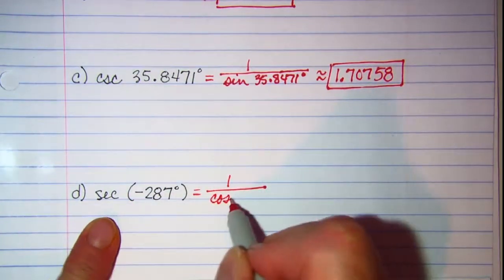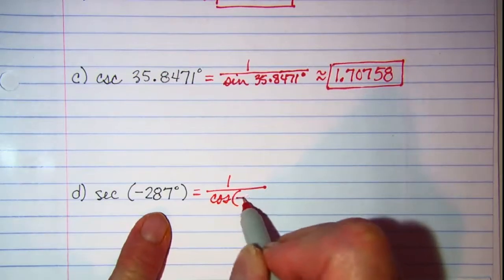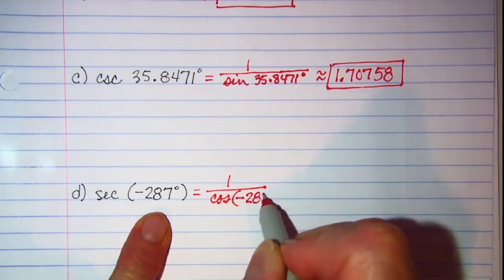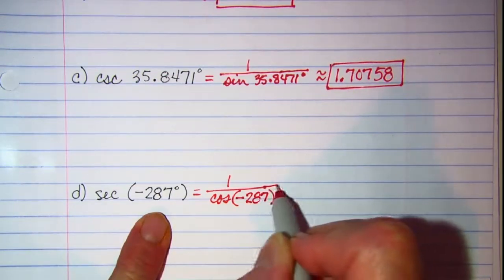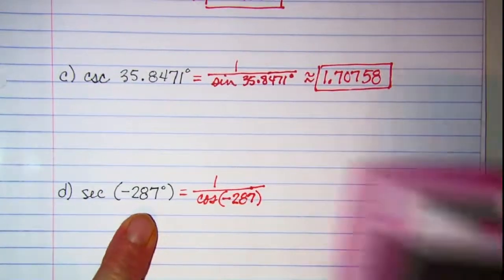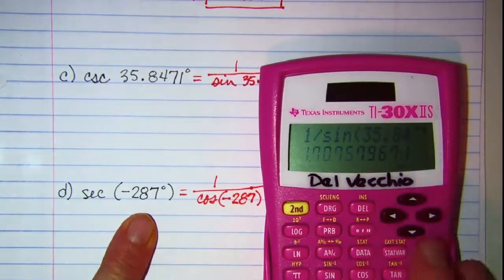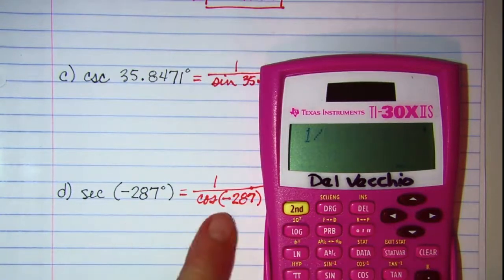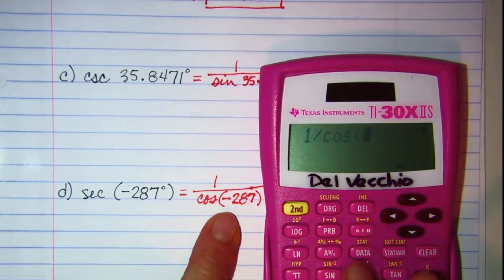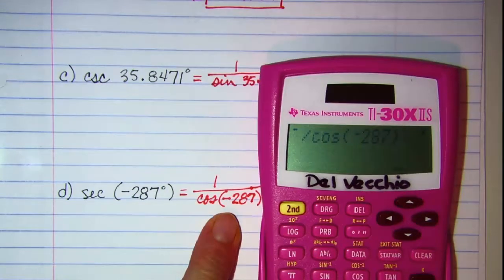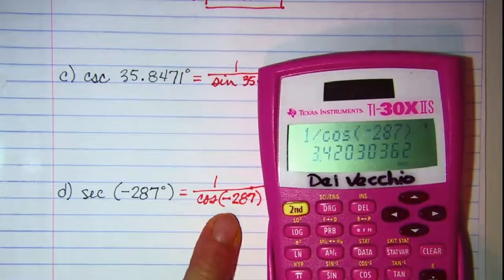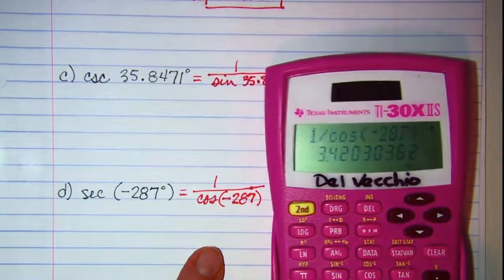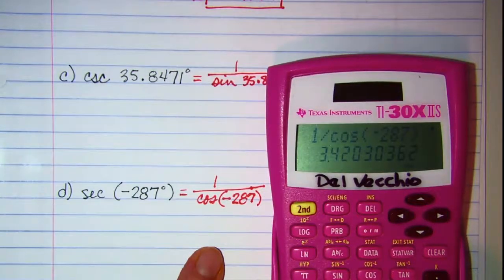so 1 divided by cosine of negative 287. 1 divided by the cosine of negative 287 is 3.42030.